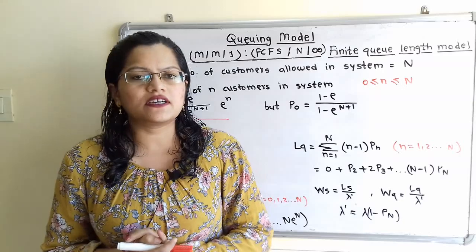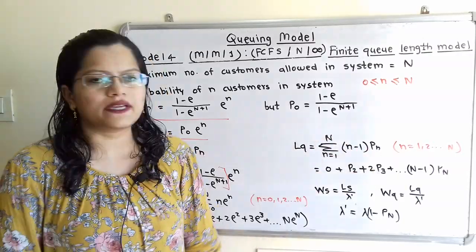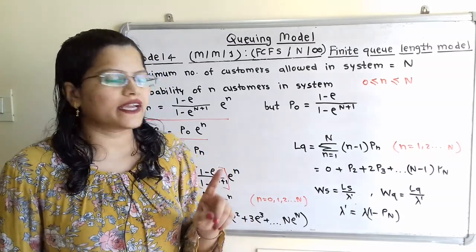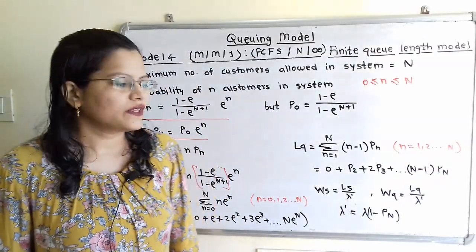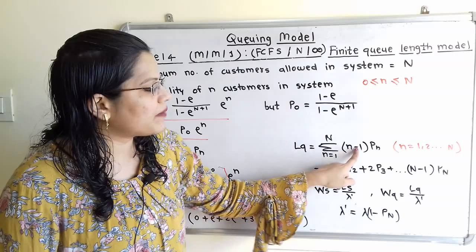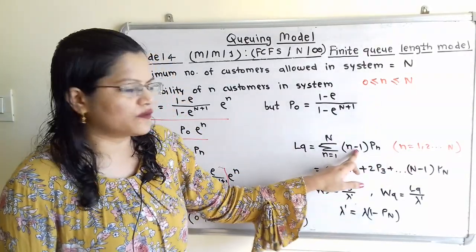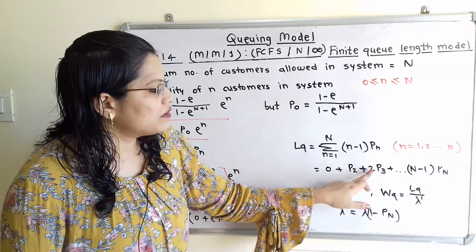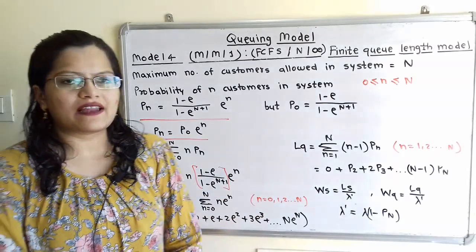The length of the queue, Lq, is given by Σ(n=1 to N) (n−1) × P(n). When n = 1: (1−1) × P(1) = 0. When n = 2: 1 × P(2) = P(2). When n = 3: 2 × P(3) = 2P(3), and so on up to (N−1) × P(N). This is the formula to calculate the length of the queue.